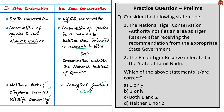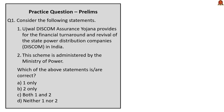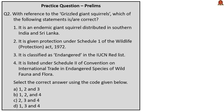We now come to the practice questions discussion. Question 1: Consider the following statements. Statement 1: Ujwal Discom Assurance Yojana provides for the financial turnaround and revival of state power distribution companies in India. Statement 2: The scheme is administered by the Ministry of Power. Both statements are correct — they are direct statements. Note that the UDAY scheme was introduced in November 2015. The correct answer is option C — both 1 and 2.